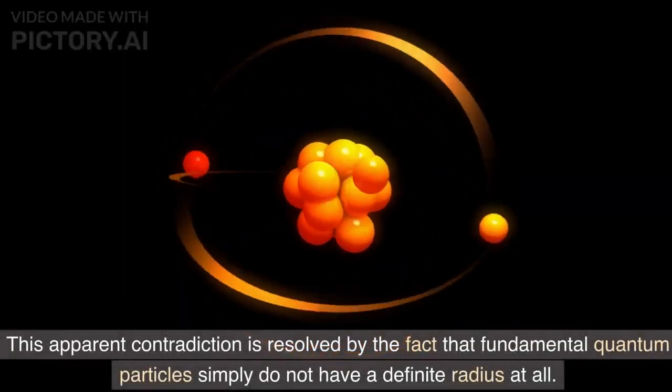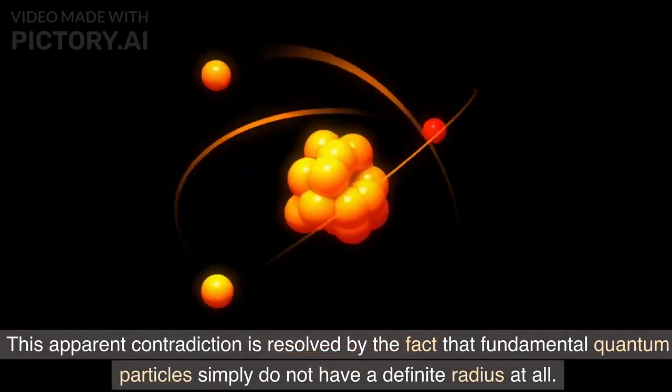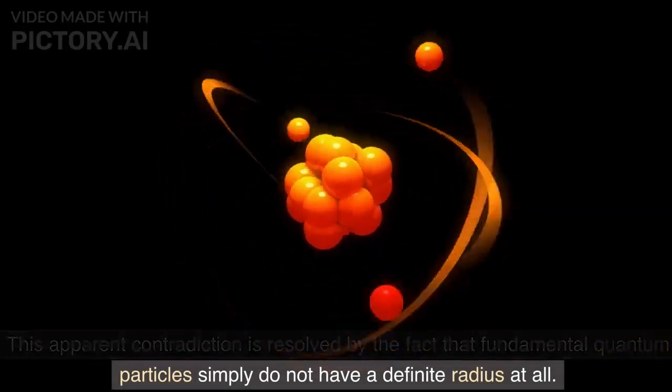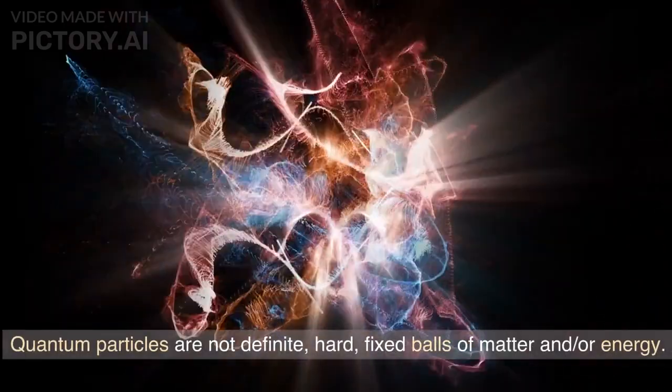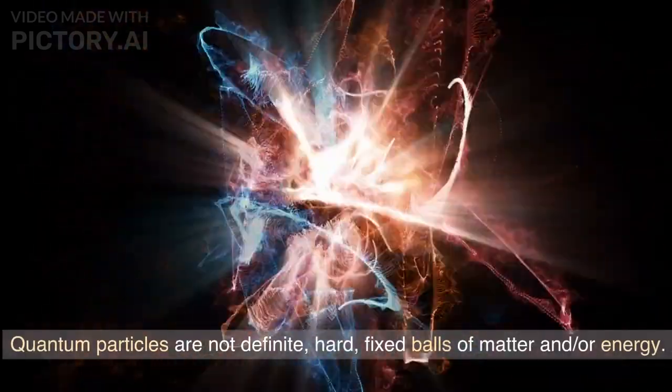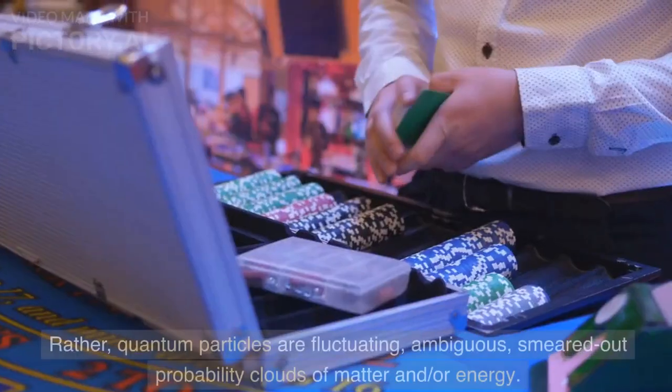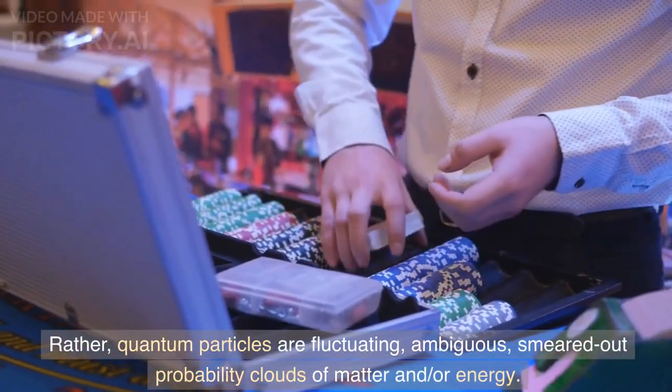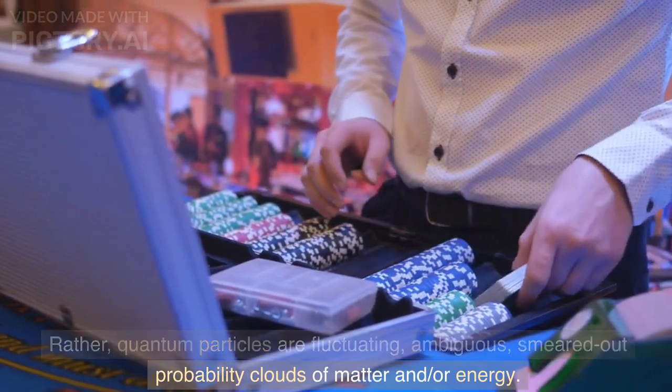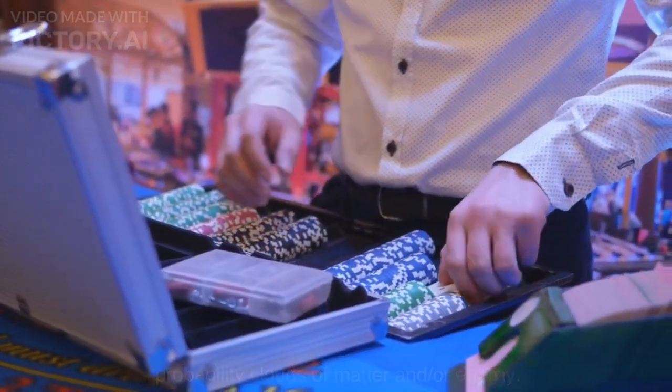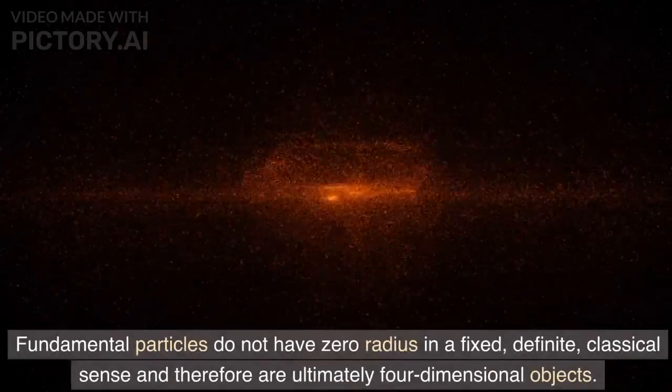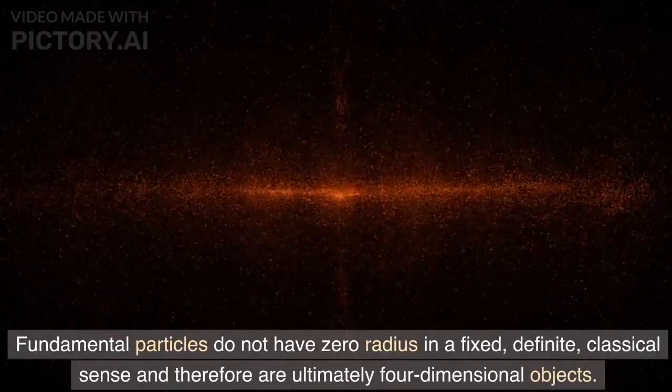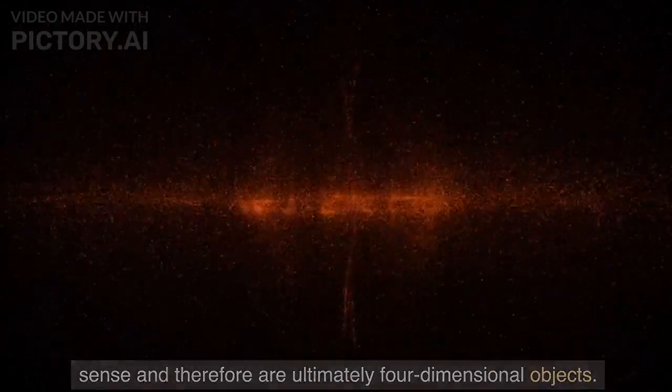This apparent contradiction is resolved by the fact that fundamental quantum particles simply do not have a definite radius at all. Quantum particles are not definite, hard, fixed balls of matter and/or energy. Rather, quantum particles are fluctuating, ambiguous, smeared-out probability clouds of matter and/or energy. Fundamental particles do not have zero radius in a fixed, definite, classical sense and therefore are ultimately four-dimensional objects.